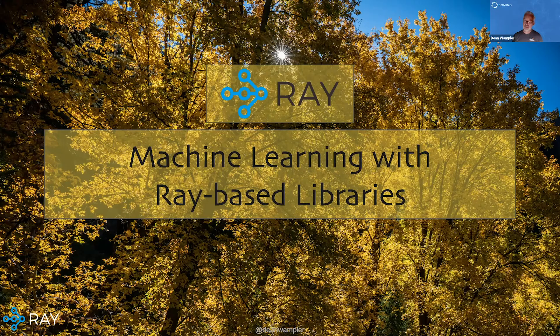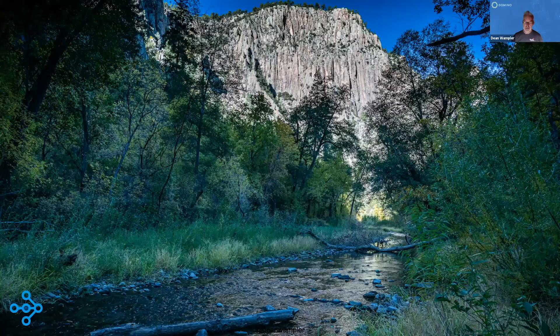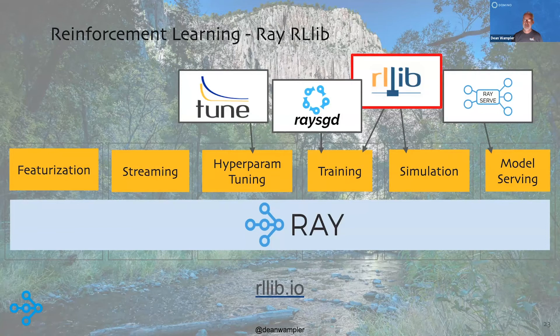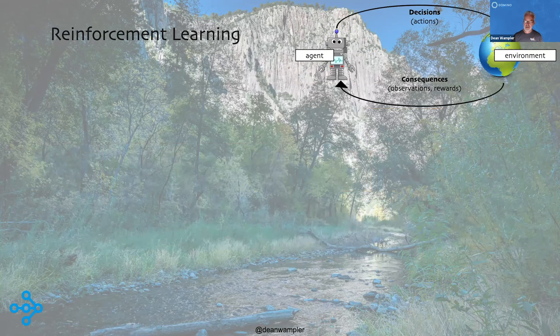Let me talk about machine learning libraries that are based on Ray and leverage Ray. The one I'm going to talk about is my personal favorite — the reinforcement learning library called RLlib. It's probably the biggest and most widely used of the Ray libraries that come with Ray, and you can find documentation at RLlib.io. Ray.io is the website to find out more about Ray overall.